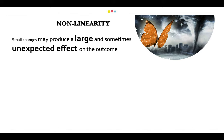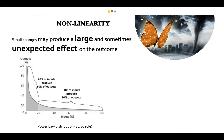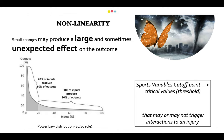Another key point is nonlinearity, meaning that small changes may produce a large and sometimes unexpected effect on the outcome. For example, in this graphic we can see that roughly 80% of the outcome comes from 20% of your effort — the input is not proportional to the output. When we talk about nonlinearity, it also means that we should try to identify cut-off points for sports variables, which are critical values or thresholds that may or may not trigger interactions related to a specific injury.